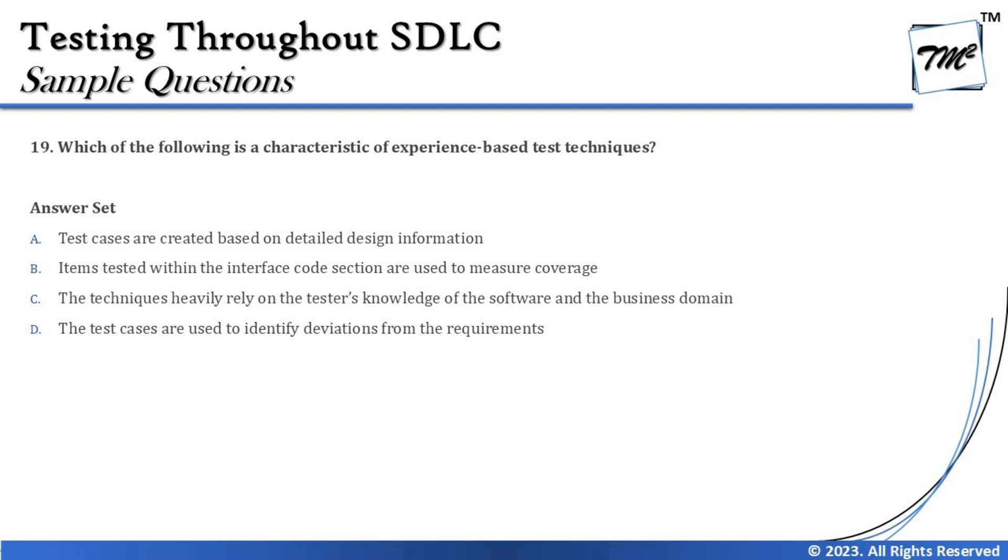Option C says the technique heavily relies on the tester's knowledge of the software and the business domain. That is indeed one of the contributing elements for experience-based test techniques. Number one: past experience. Number two: domain knowledge. Number three: knowledge of typical defects the tester has seen in past similar products.